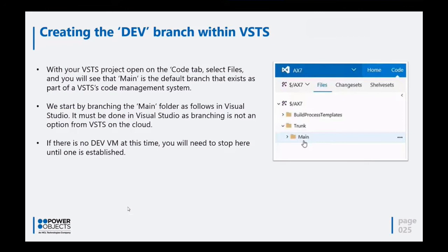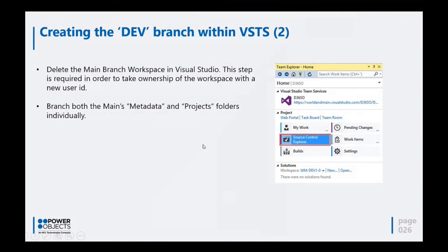If there is no DevVM at this point, you need to stop and get one established. It's great to be setting up VSTS, but if you don't have a DevBox, you need to create one because we don't want to connect this to any other environment than a DevBox for now. To create a new branch, the first thing you need to do is delete the main branch workspace. Visual Studio creates workspaces automatically per branch per user, and there are certain scripts you can use to do this very fast.